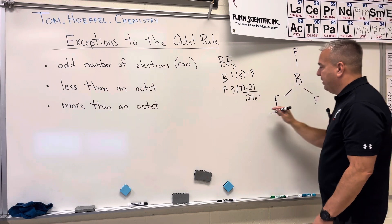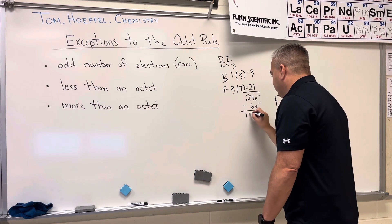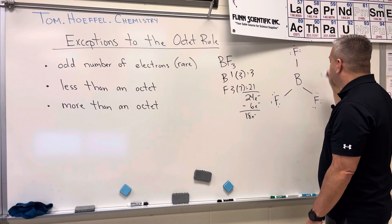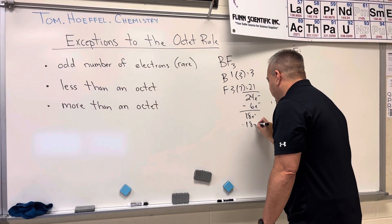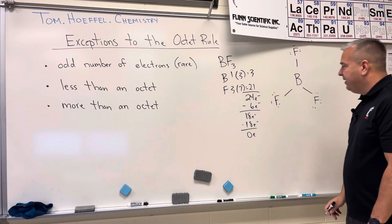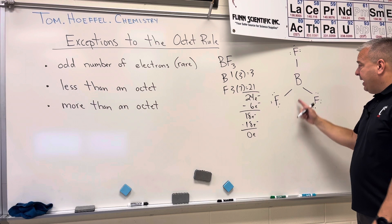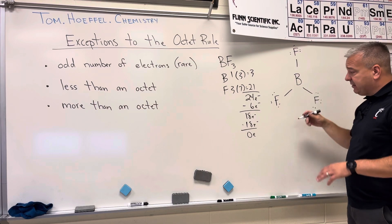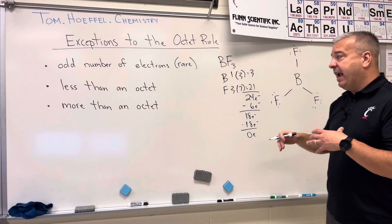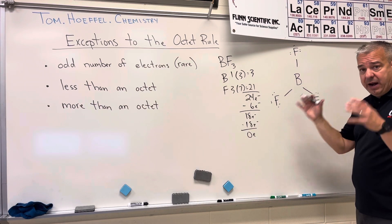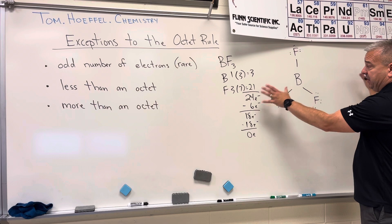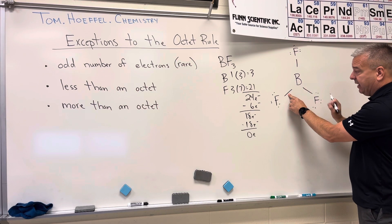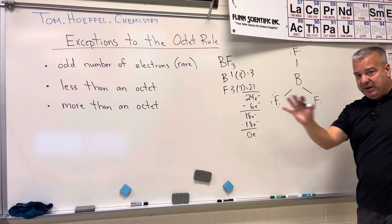That used up six electrons, which means there are 18 electrons left over. I'm going to put those on the non-central atoms. That used up all 18 electrons and there are none left. So when I look at my central atom — boron — the boron only has six valence electrons. It has less than an octet. Typically in a regular covalent problem, this would be treated as a resonance problem where we'd erase two electrons and put a double bond to get boron up to eight, and we could do it from any of three positions.